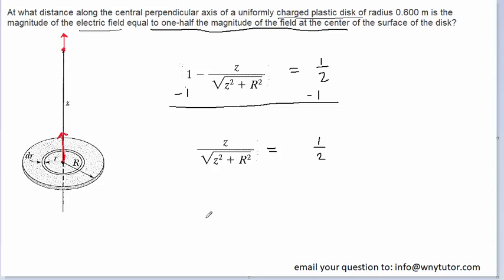Perhaps next what we can do is, in order to get rid of this square root, is square both sides of this equation. Now when we square the left-hand side, we have to square both the numerator and the denominator, so the numerator is going to become z squared. In the denominator, when we square a square root, that effectively of course cancels the square root, so we'll be left with just z squared plus r squared. The right-hand side, same idea, square the numerator, that remains one, square the denominator, that becomes a four.